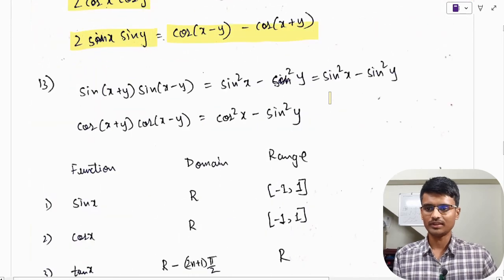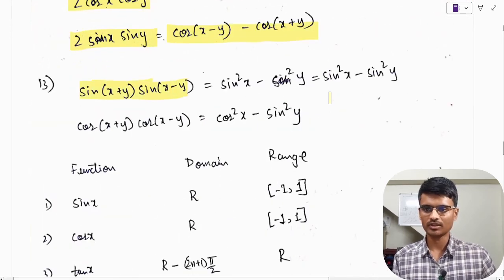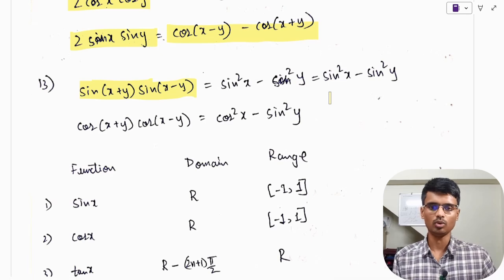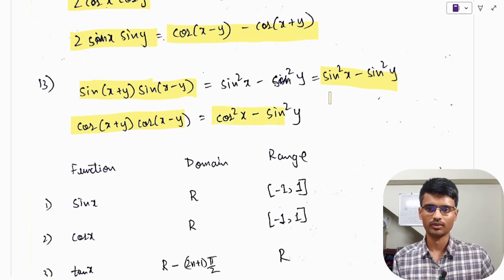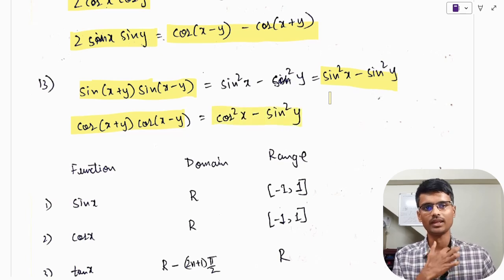These are also important formulae: sin(x+y) · sin(x−y) = sin²x − sin²y. Cos(x+y) · cos(x−y) = cos²x − sin²y. Note that sin²y appears in both formulae.